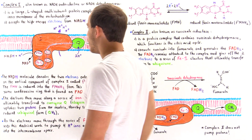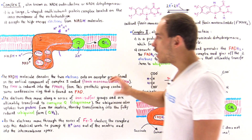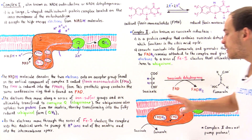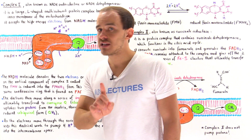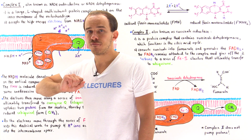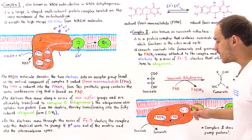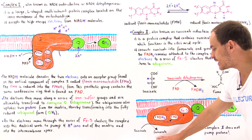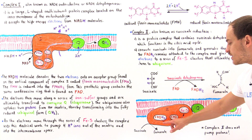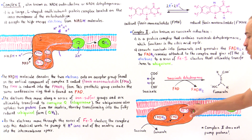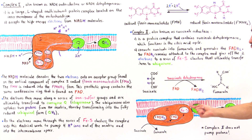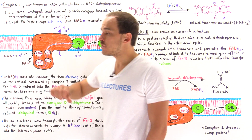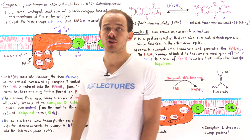A very important distinction: complex 1 pumps protons and helps generate the electrochemical gradient for hydrogen ions, but complex 2 does not pump any protons. That is precisely why NADH is able to form a greater number of ATP molecules compared to FADH2. Ubiquinone is the electron carrier that shuttles electrons from either complex 1 or complex 2 onto complex 3 of the electron transport chain.